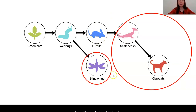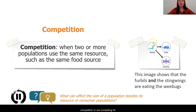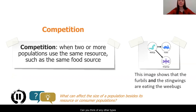I also noticed another type of relationship. The sting wings have the same resource population as the furbles. This is something we haven't seen yet before in our studies. We call this competition. Competition is when two or more populations use the same resource, such as the same food source. Notice in this case the furbles and the sting wings are in competition or competing for their resource population of the wee bugs. I want you to pause the video for a moment and check in with someone. What other kinds of competition can you think of? Can you think of any other types that might exist in an ecosystem?